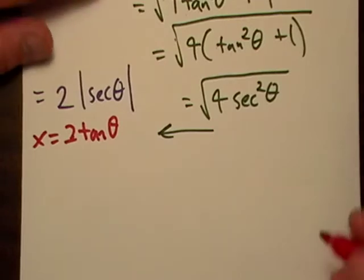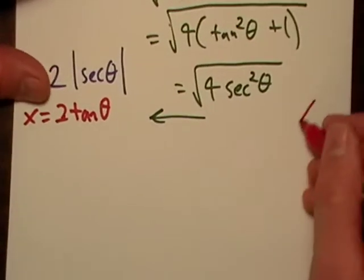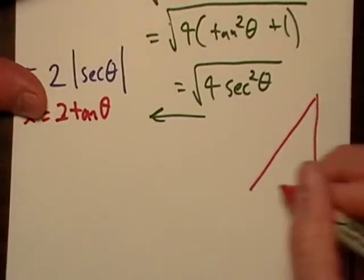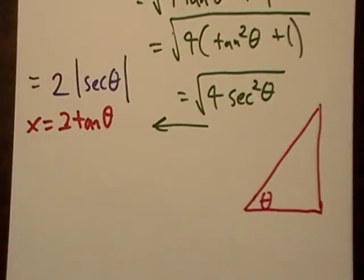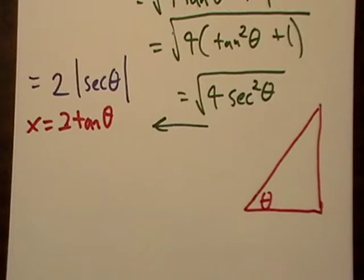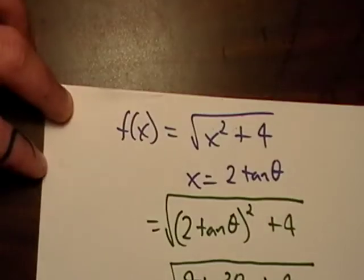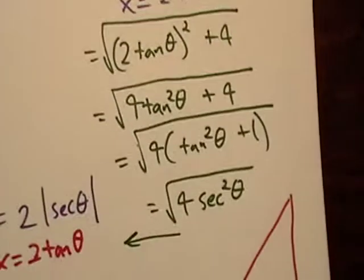So now we need to draw a triangle to get down to the bottom of this, because what we're trying to do is we're trying to write our answer in terms of x instead of theta, because see, this was f of x, not f of theta.